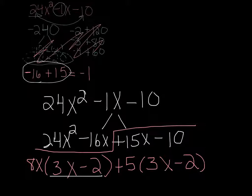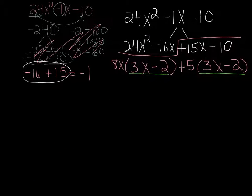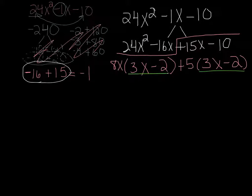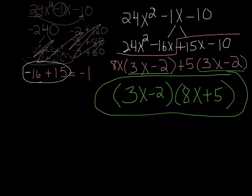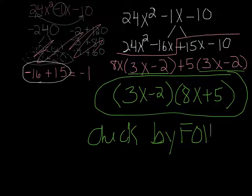So we are just about done this problem now. So the 3x minus 2 and the 3x minus 2 are the same, so they can come out. And then what's left is the 8x plus 5. So that's it. This is your answer. Now remember, you can check it by foiling. So you always know if it's correct or not.